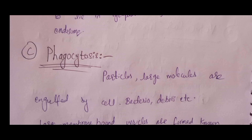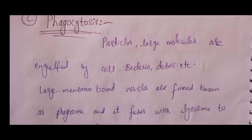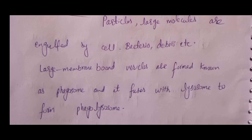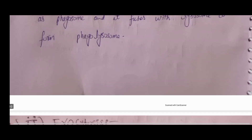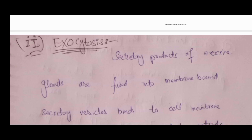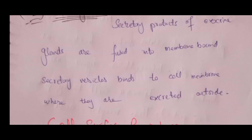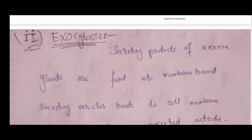In phagocytosis, cells engulf large particles such as bacteria, cellular debris, and other cells — typically performed by macrophages. Large membrane-bound vesicles called phagosomes are formed and then fuse with lysosomes to form phagolysosomes. The second vesicular process is exocytosis, which means the secretion of particles from the cell to the outside. For example, exocrine glands secrete their products outside the cell via membrane-bound secretory vesicles that fuse with the cell membrane and exit.